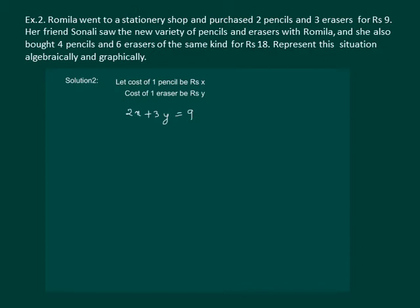Whilst Sonali bought 4 pencils and 6 erasers for Rs 18. The two equations are the algebraic representation of the situation.